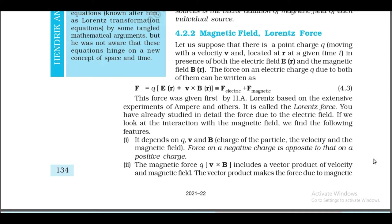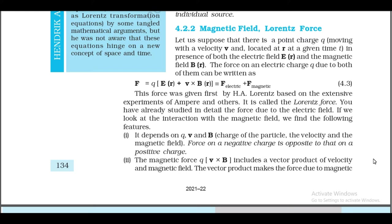Section 4.2.2: Magnetic Force — Lorentz Force. Suppose there is a point charge q moving with velocity v in the presence of both electric field E and magnetic field B. The force on the charge is: F = q(E + v × B) = F_electric + F_magnetic. This force was first given by H.A. Lorentz, based on the extensive experiments of Ampere and others. It is called the Lorentz force.